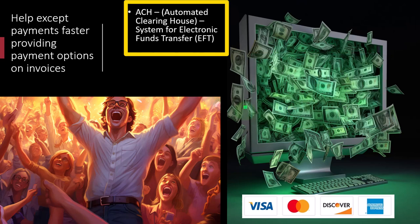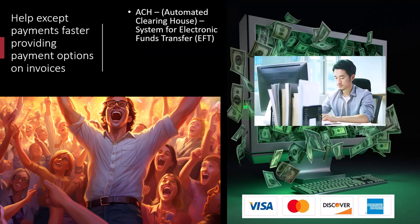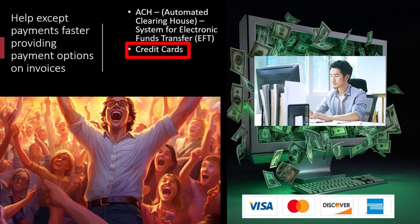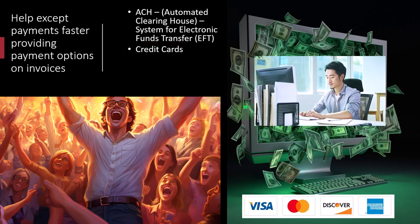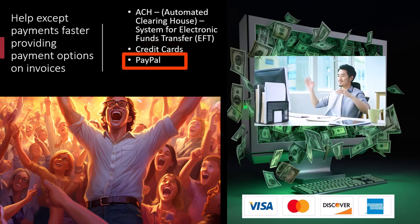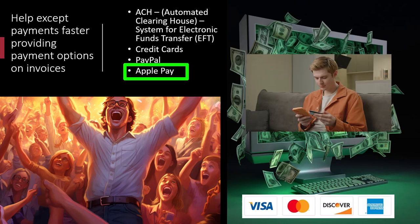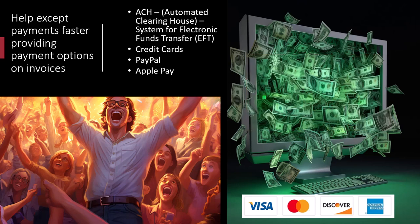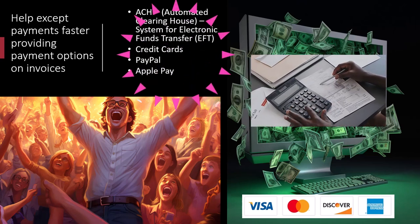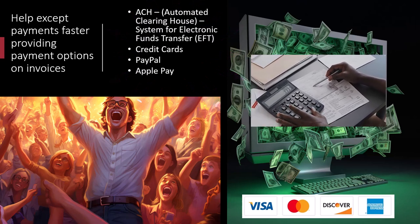Available payment options include ACH — an automated clearinghouse system used for electronic funds transfer from a bank account — as well as all major credit cards: Visa, MasterCard, Discover, and American Express. There's also PayPal, which some people use like a checking account, Apple Pay, and Venmo. If we can send an invoice and let them pay through whichever option they prefer, the turnaround on our invoices will be faster, improving accounts receivable tracking and cash flow.